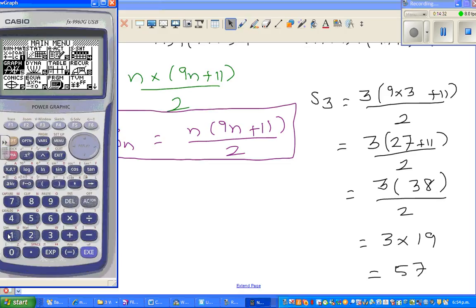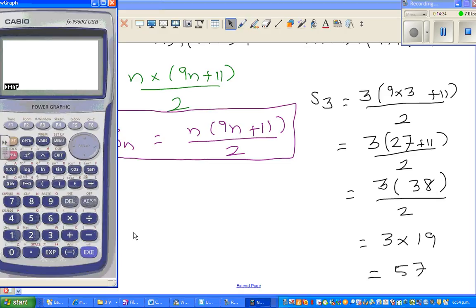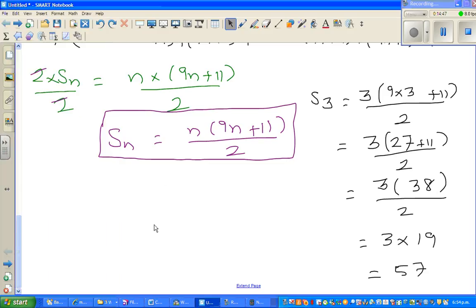I will show you this on a calculator. So menu 1. You can directly type in this whole thing. So 3 bracket 9 times 3 plus, because the calculator understands bed mass, that is 114, divided by 2, which is 57. So this formula is perfectly fine.